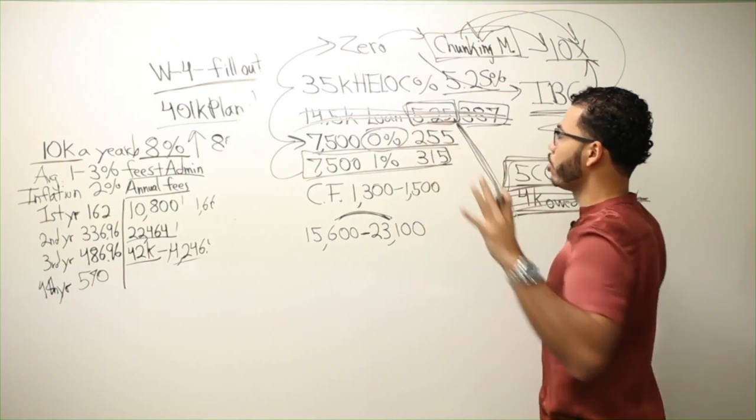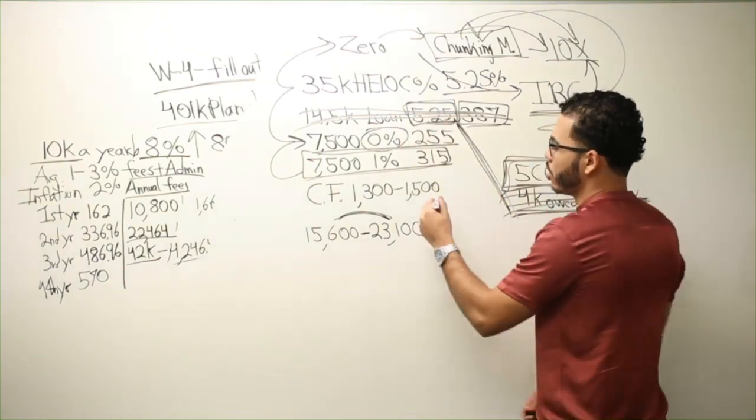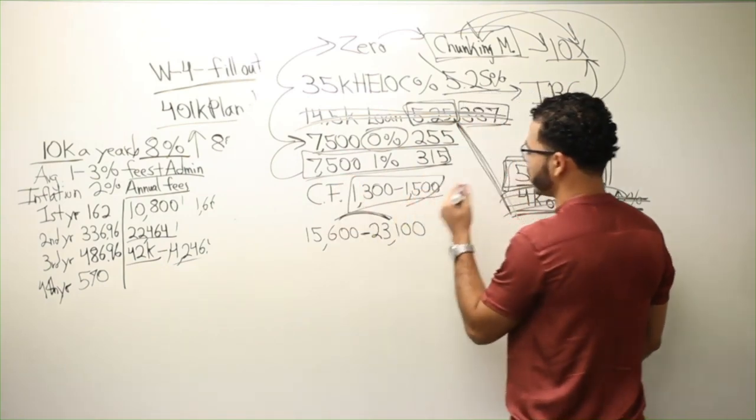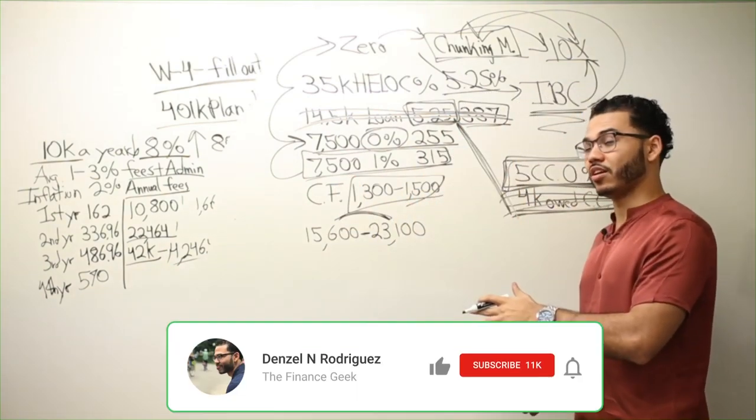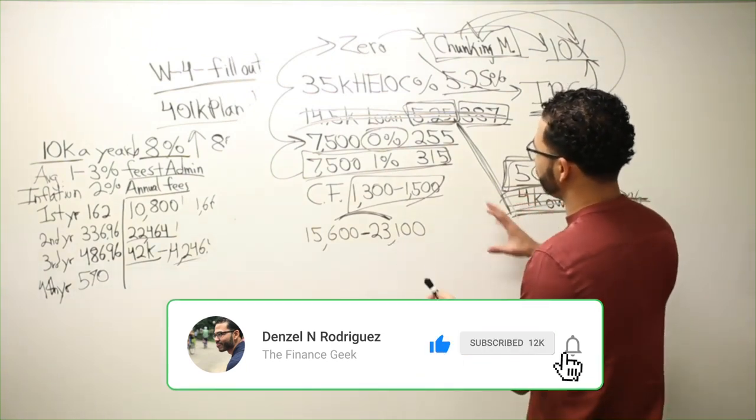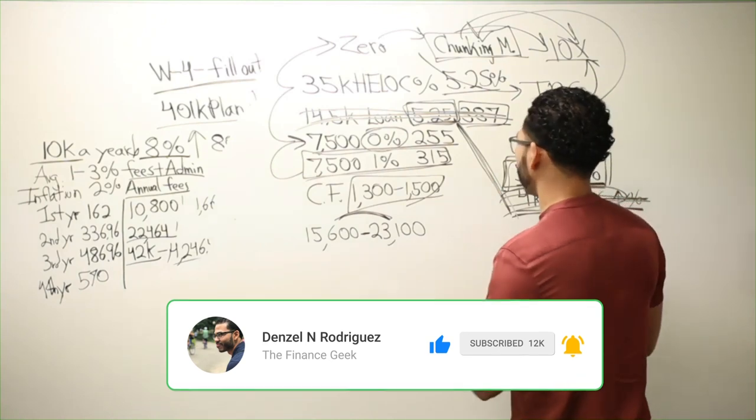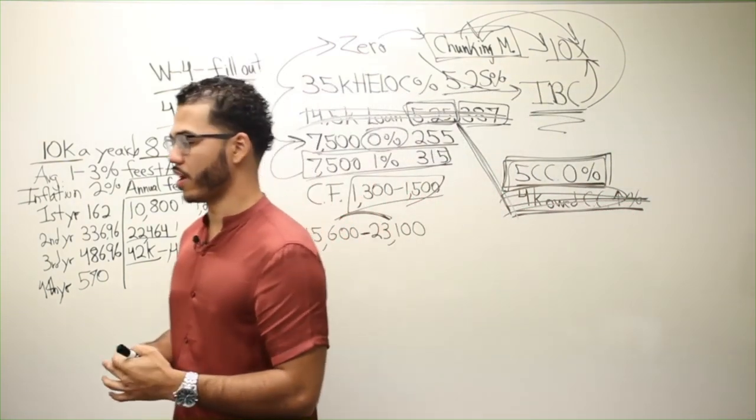Because whatever I borrow will get immediately subtracted by the new cash flow gain and the existing cash flow plus all of his income. Therefore, doing velocity banking about a six to nine month window to bring that to zero to then just chunk again. And we're just going really, really fast at that point.